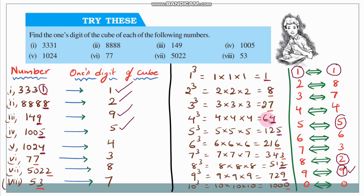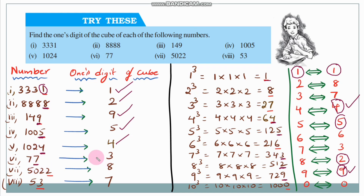For 1024: the units digit is 4. Since 4³ = 64, the units digit of the cube is 4. For 77: the units digit is 7. Since 7³ = 343, the units digit of the cube is 3.